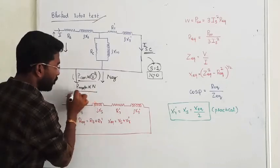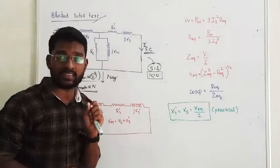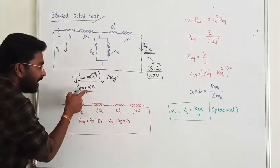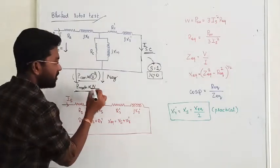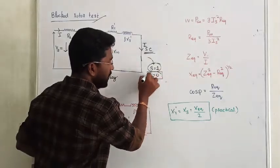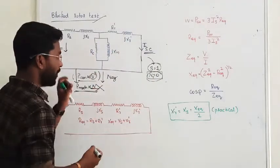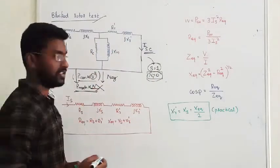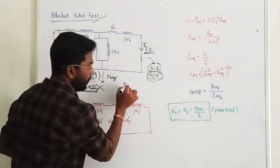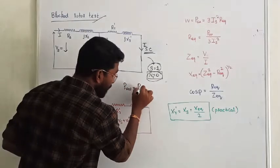Similarly, mechanical losses. Mechanical losses are directly proportional to speed of the machine. Rotor speed is zero, induction motor running at zero speed. For zero, mechanical losses are also neglected. So if you want to measure the loss, that is called variable losses, that is called copper loss.